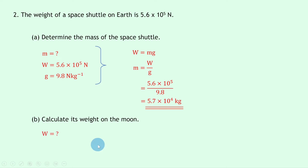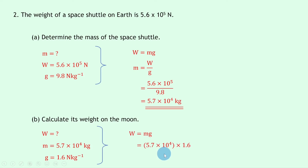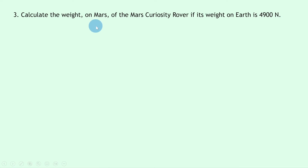Part b says to calculate the shuttle's weight on the moon. We're trying to find W, we know mass is 5.7 × 10⁴ kilograms — that stays the same no matter what planet you're on — and the gravitational field strength g on the moon is 1.6 newtons per kilogram. Writing down W = mg and substituting in: 5.7 × 10⁴ times 1.6 gives an answer of 9.1 × 10⁴ newtons.